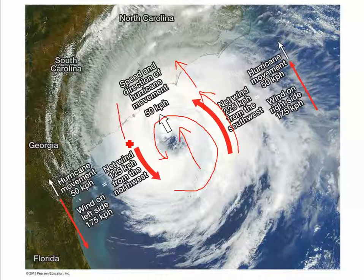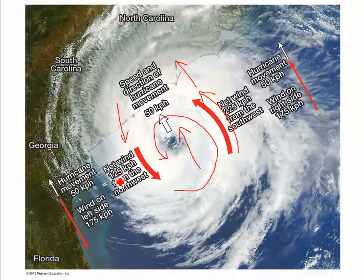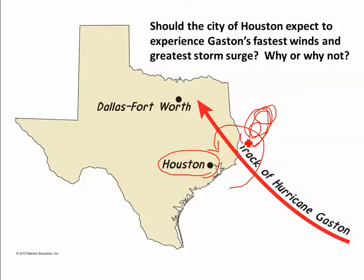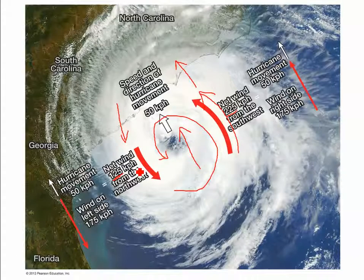If you're west of the eye, you don't experience as strong of winds — the wind speed east of the eye is higher than west of the eye. Going back to where Houston is: if this is the track of Gaston with that counterclockwise circulation, it's the area to the east that will experience the highest winds and greatest storm surge. Houston, being to the west, is not going to experience that.